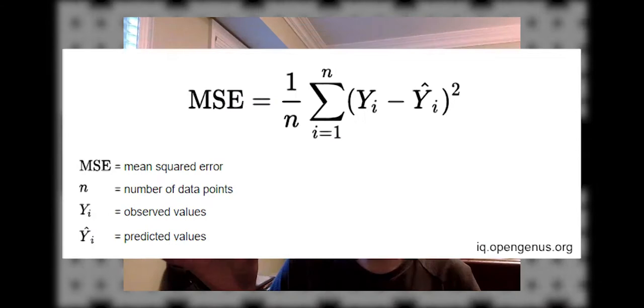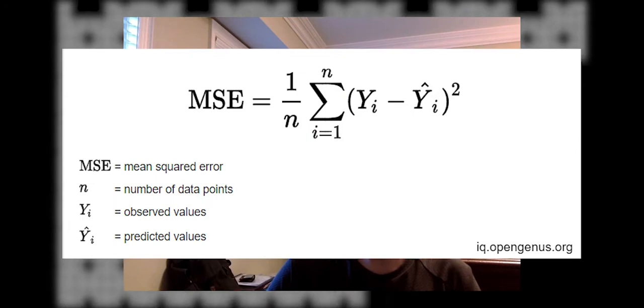In simple terms, a neural network learns a lot like a human does, through trial, error, and adjustment. These exact processes are called forward propagation, error calculation, and back propagation, where it essentially just makes a prediction based on some data, sees how far it was from the right answer, and makes the weights a bit higher or lower to do better next time. The neural net does this over and over and over again.